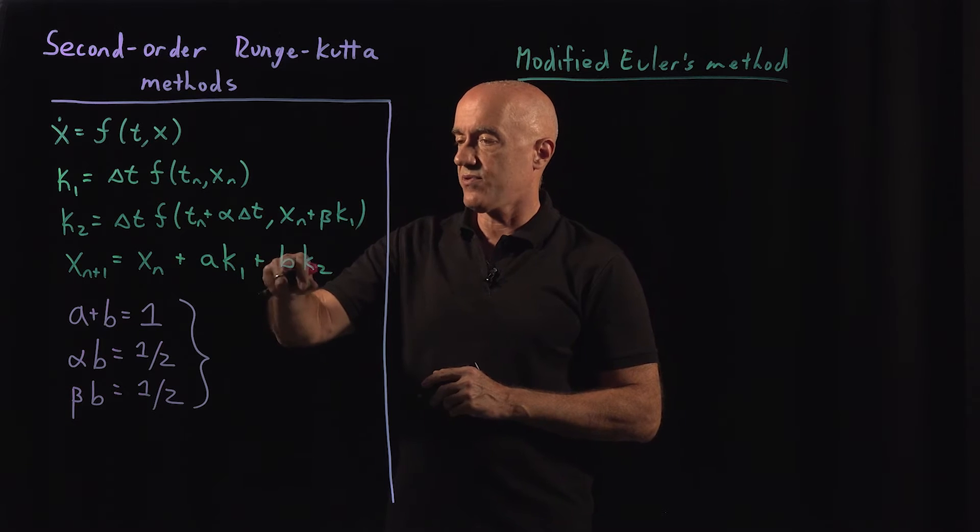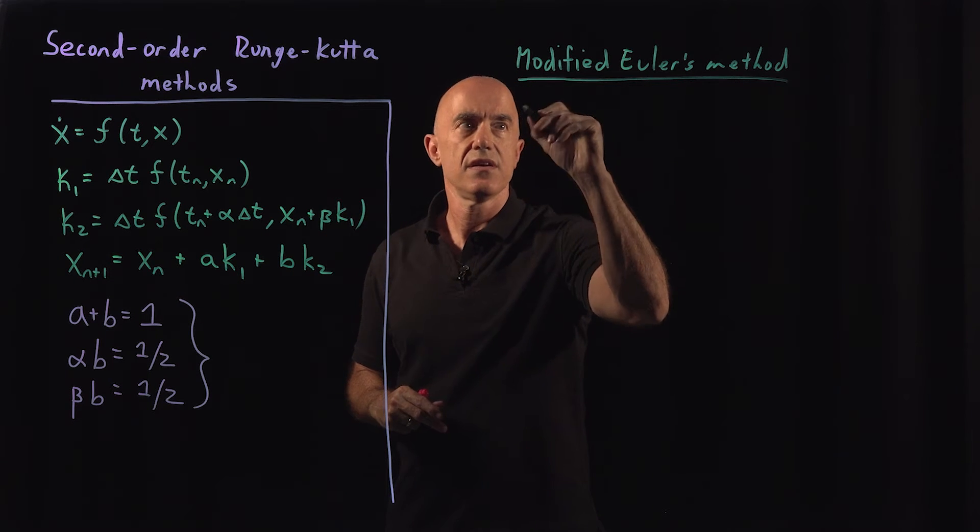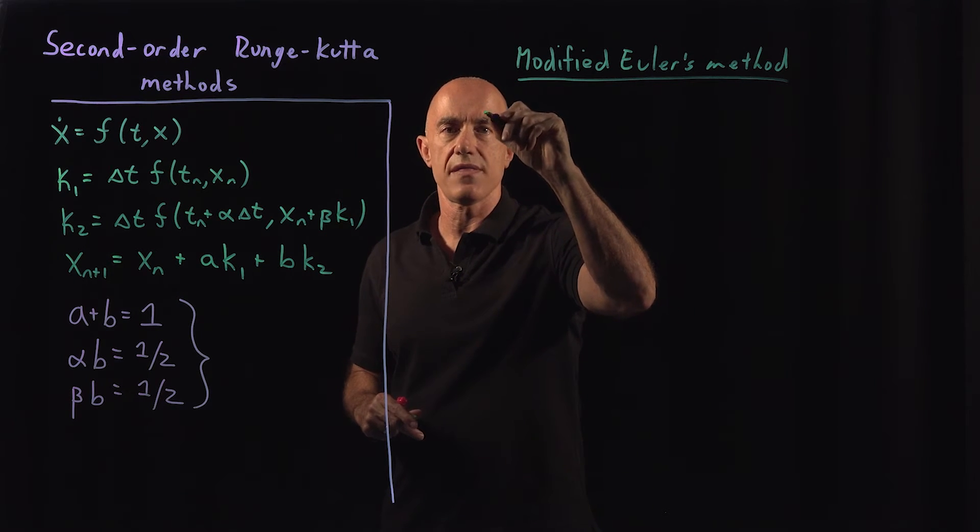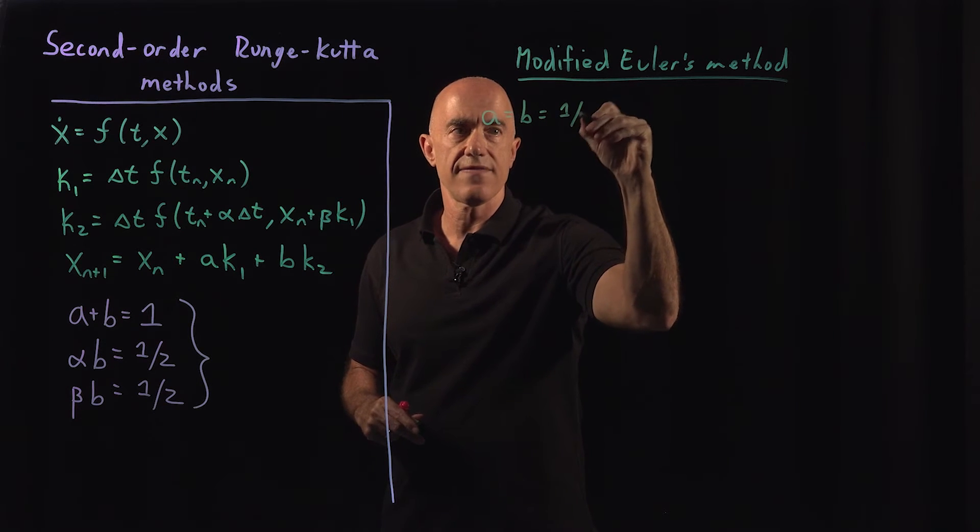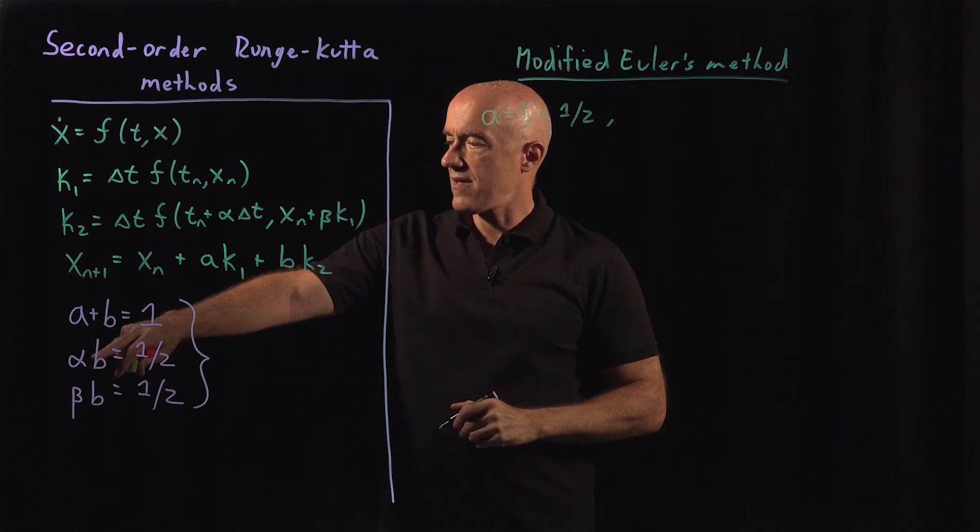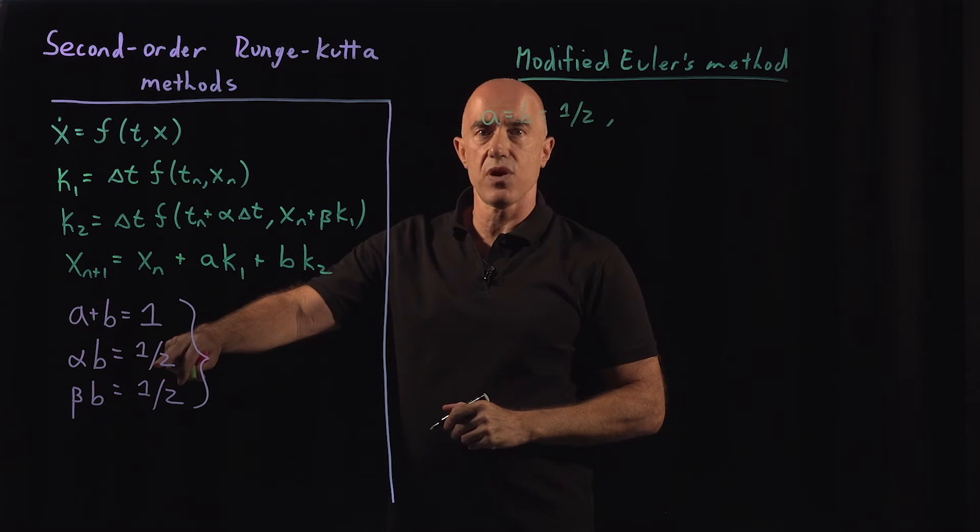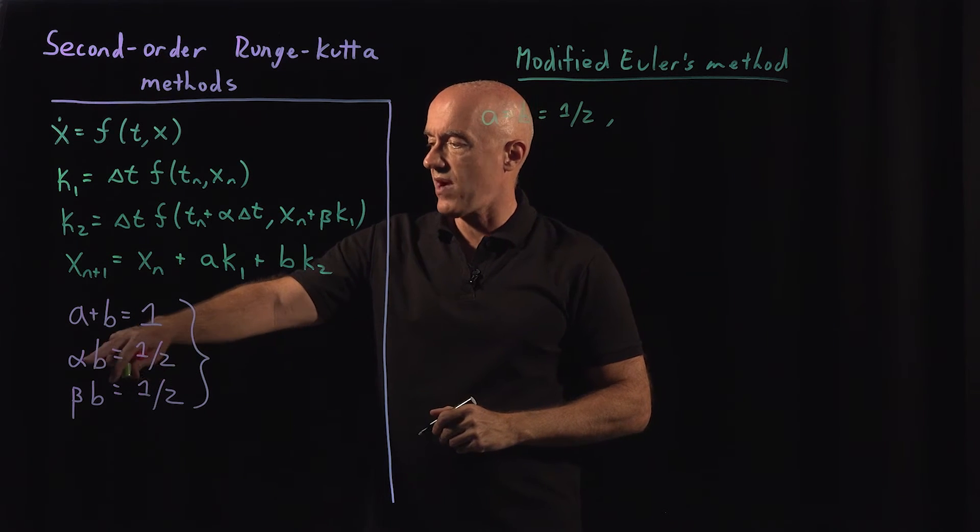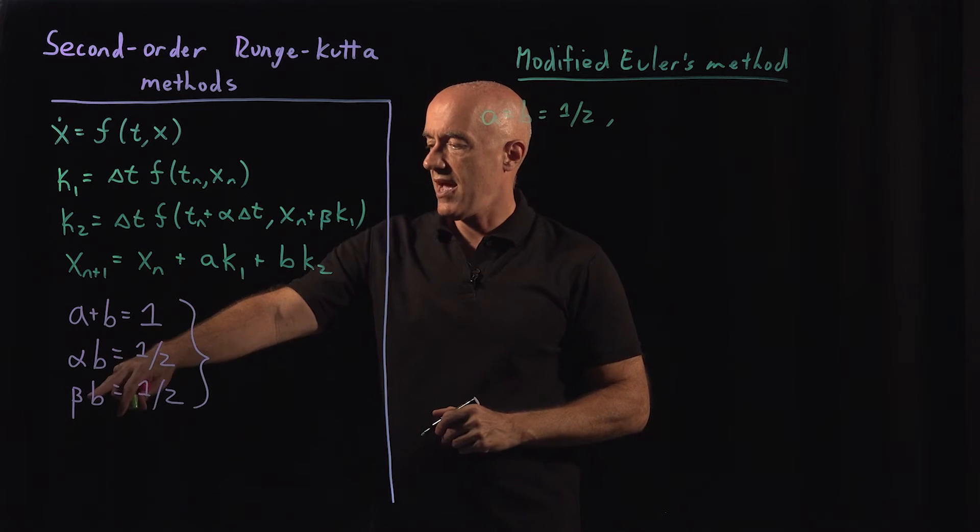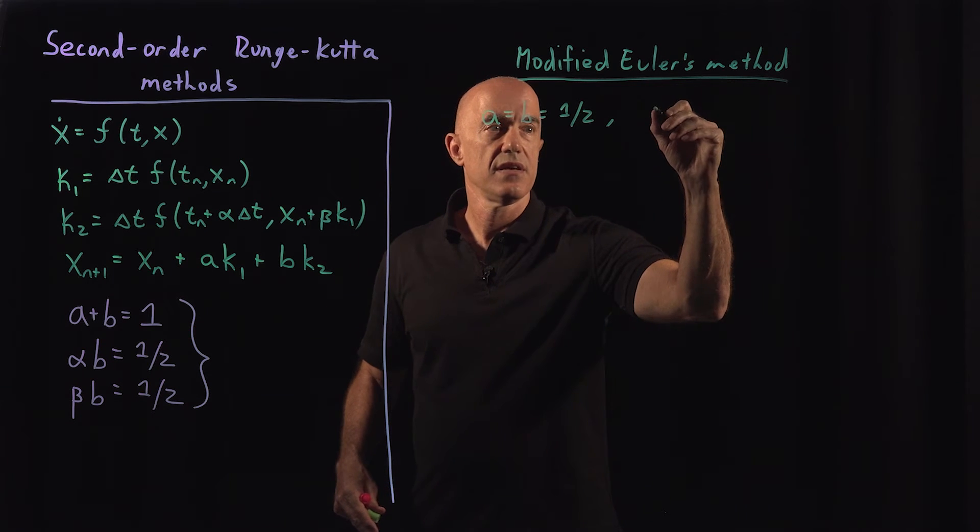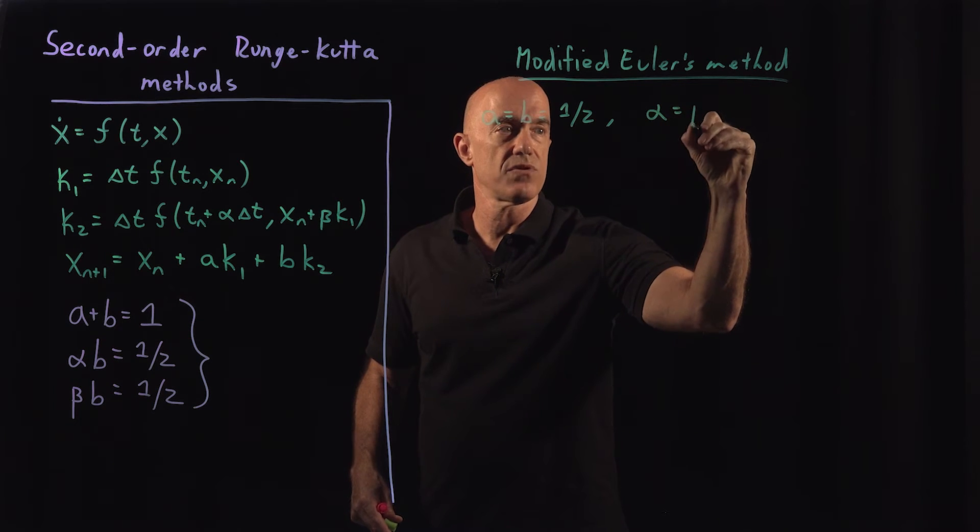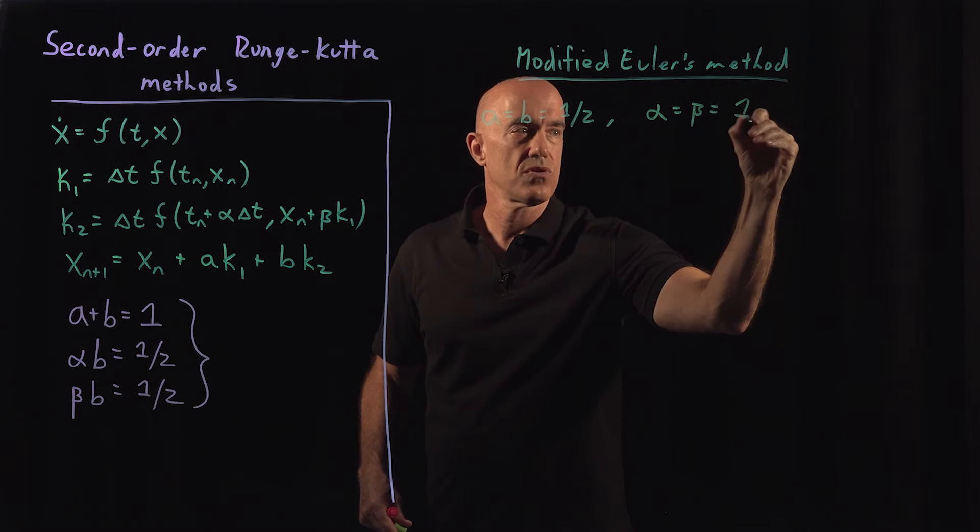That would mean that a equals b equals 1/2. So for the modified Euler's method, a equals b equals 1/2. And then alpha b equals 1/2, b is 1/2, so alpha has to be 1. And beta b equals 1/2, b is 1/2, so beta has to be 1. So we have to have alpha equal beta equal to 1.